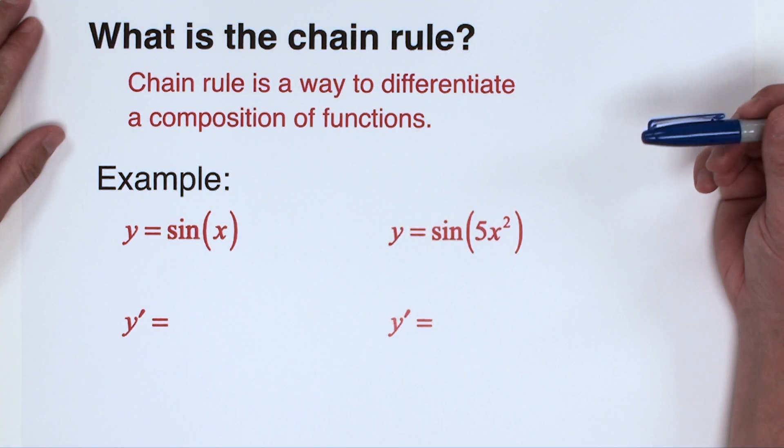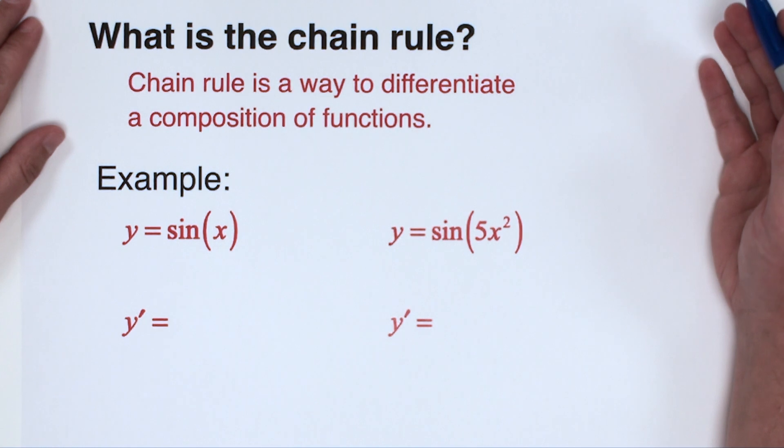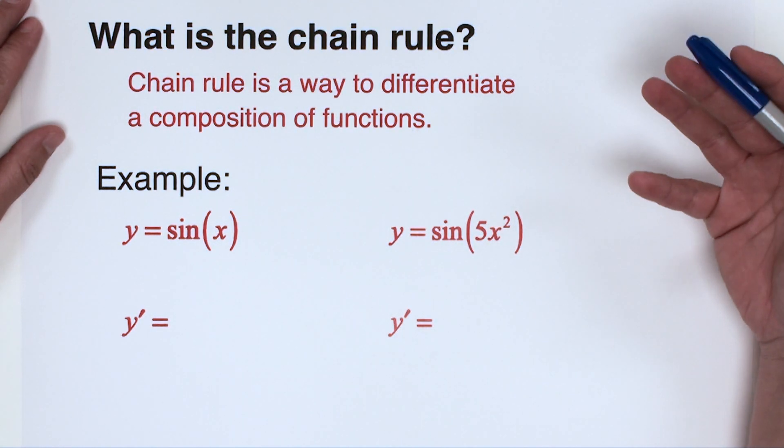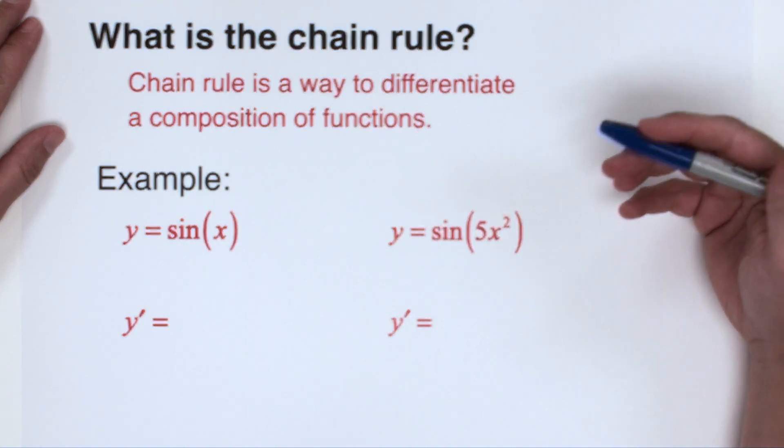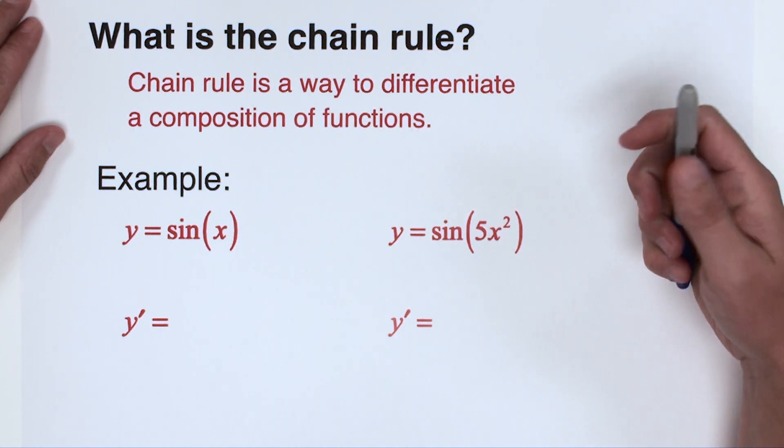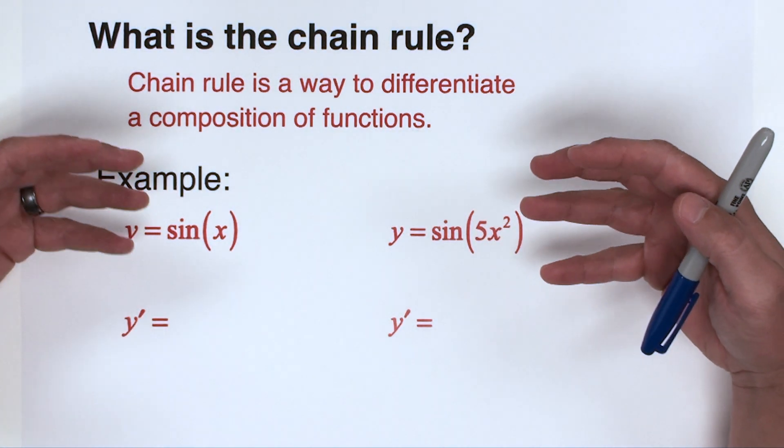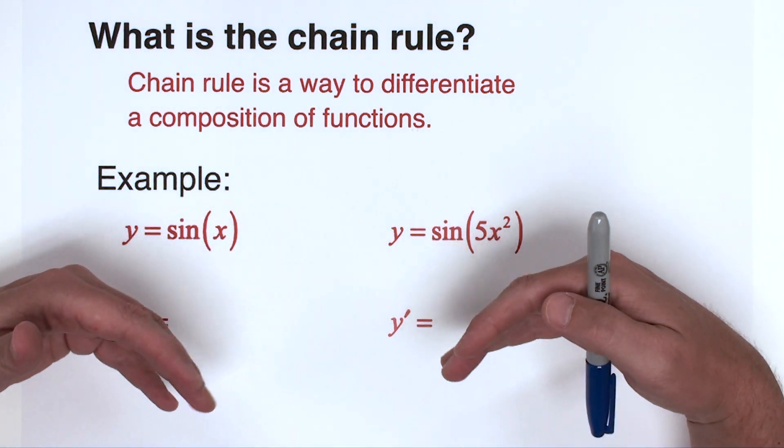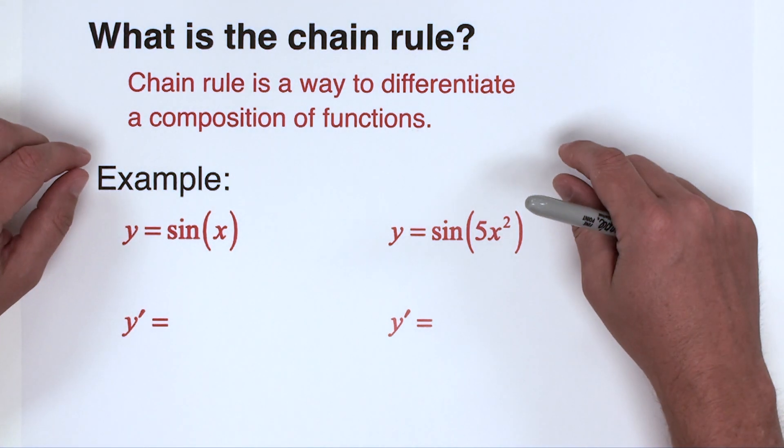So what exactly is chain rule you might ask? Quite simply, chain rule is the way that we differentiate compositions of functions. Composition meaning when we have a function built from two simple functions, right? A function within another function. That's an illustration of when you're going to use chain rule.